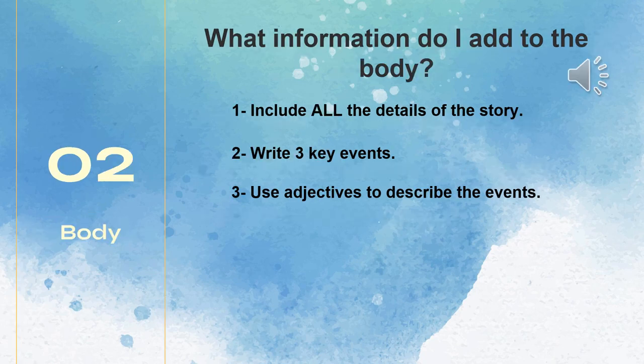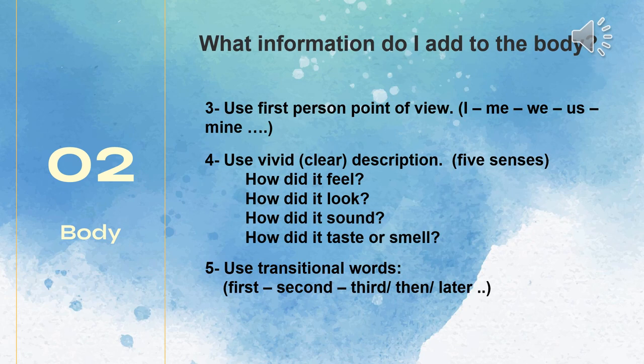Moving on to the body of your narrative — don't forget to include all the details of the story; everything has to be included. Write three different key events, highlight the major events, and use adjectives to describe them. Don't forget the sensory and figurative language whenever we talk about our personal experiences. Remember to write from the first-person point of view using 'I,' 'me,' 'we,' and 'mine.' Use vivid and clear description engaging your senses — what do you feel, how did it look, how did it sound, how did it taste or smell? And don't forget to use transitional words like 'first,' 'second,' 'third,' 'then,' and 'later' to maintain chronological order.